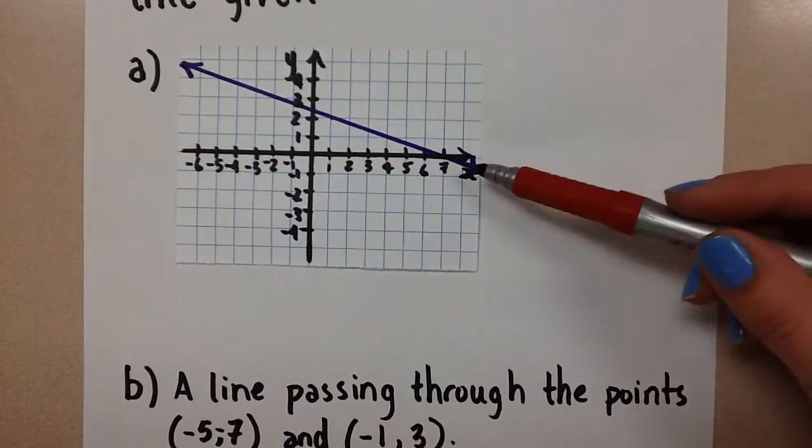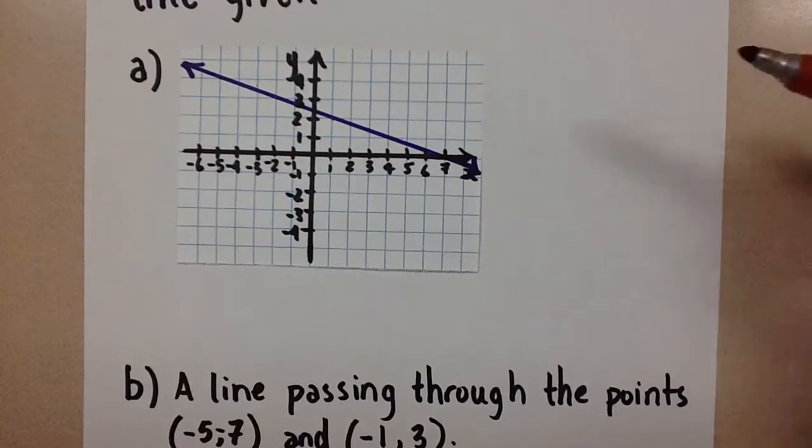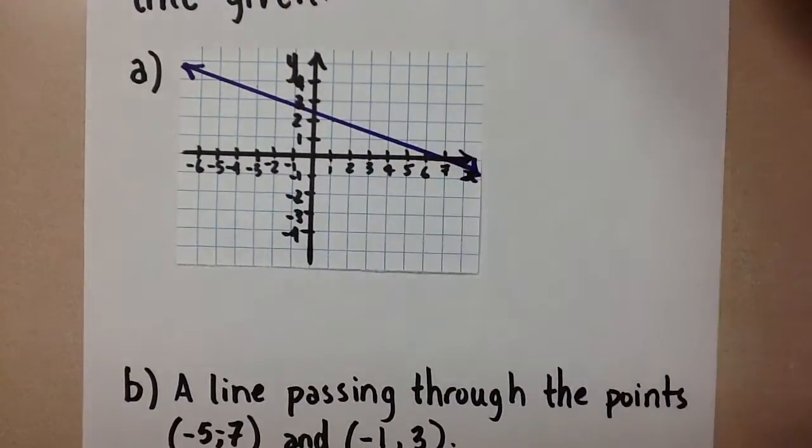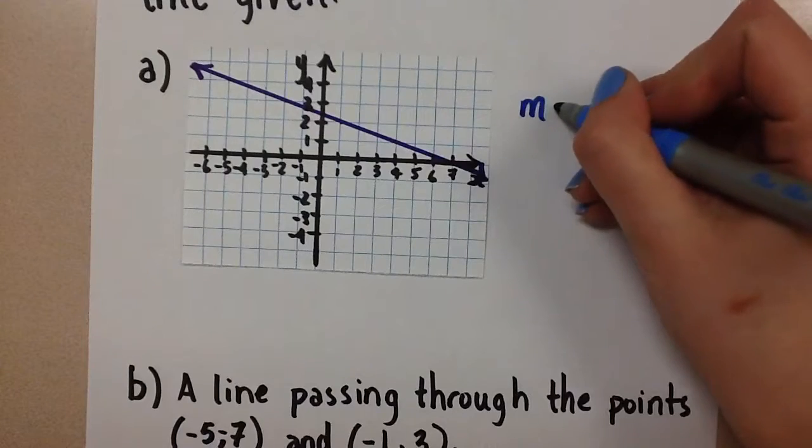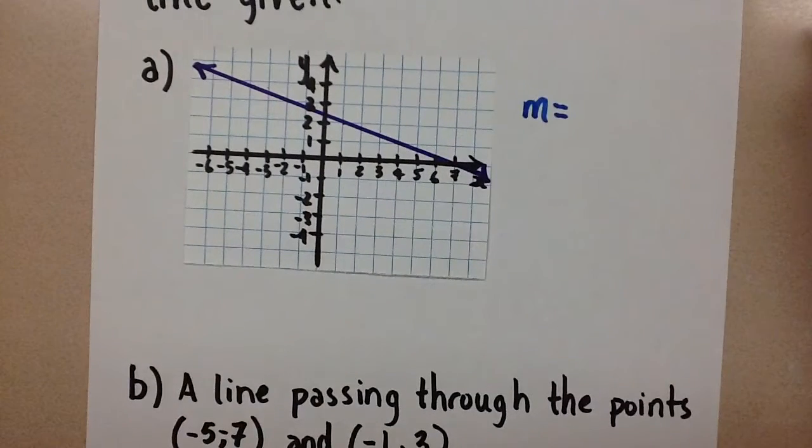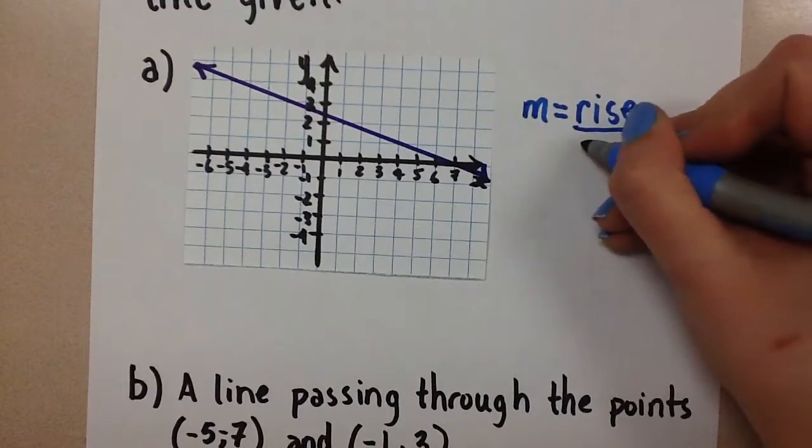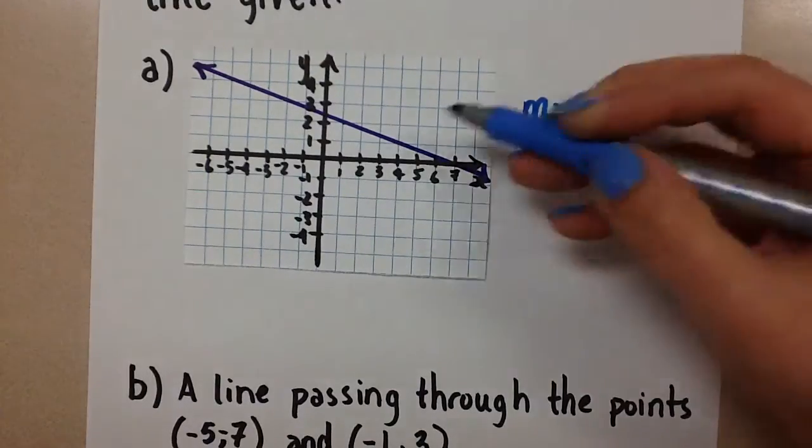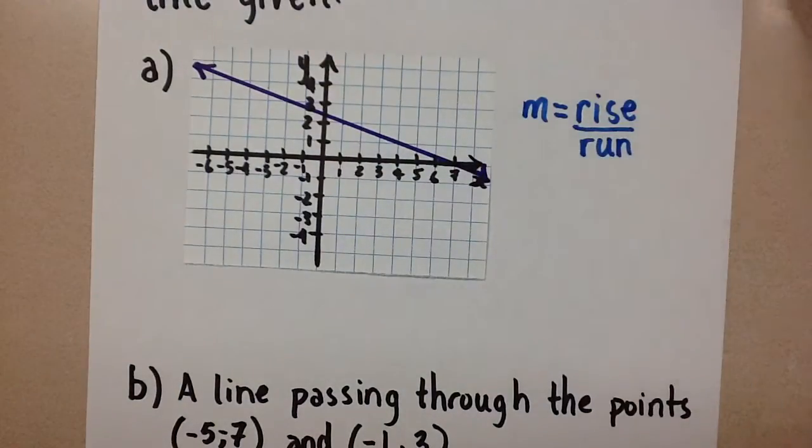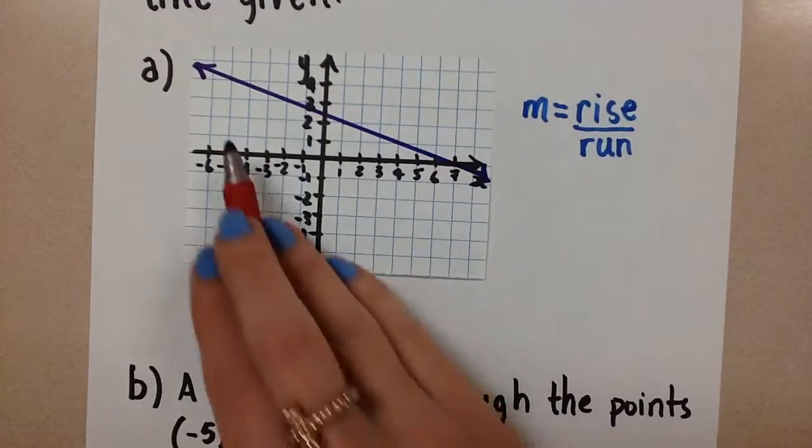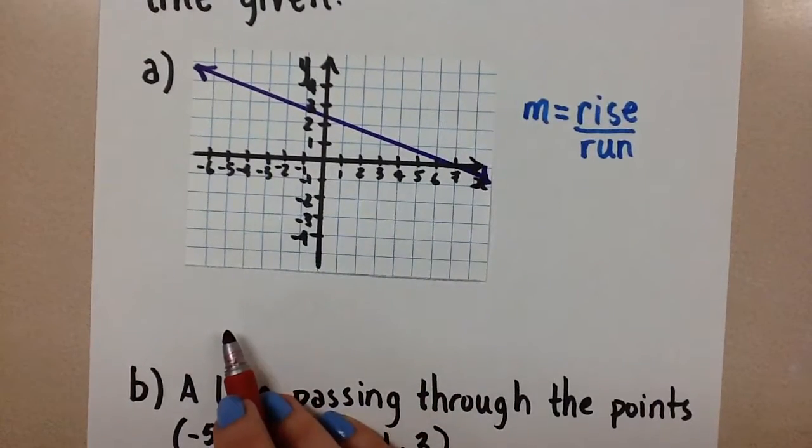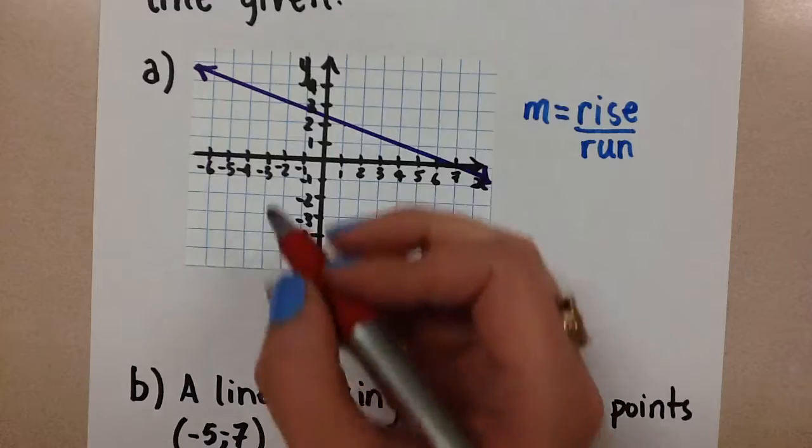So for the first one we're given this graph. I'm going to choose to use the formula slope m, that represents slope, equals rise over run to calculate the slope of this blue line. To do that I'm going to go to the graph and choose two points that are on the line.